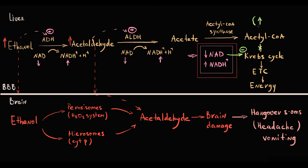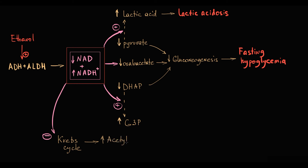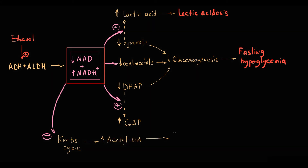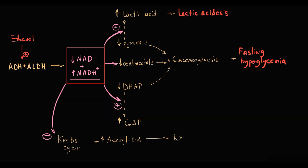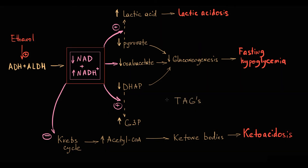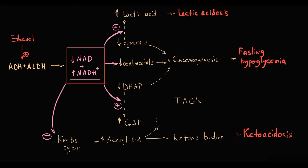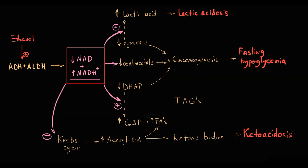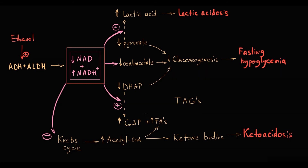Inhibition of the Krebs cycle causes accumulation of acetyl-CoA in the mitochondrial matrix. Mitochondria utilize this excess acetyl-CoA via two pathways. First, to correct the hypoglycemic state, mitochondria produce ketone bodies from acetyl-CoA, which exit into the blood and cause ketoacidosis. Second, the massive amount of acetyl-CoA is transported into the cytosol for fatty acid synthesis, increasing fatty acid production. The resulting fatty acids and glycerol are then used to form triacylglycerols, causing hepatosteatosis (fatty liver).